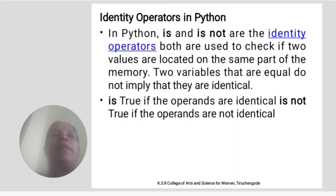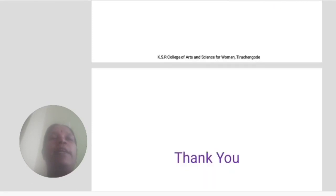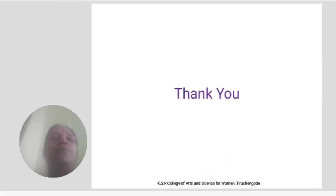Identity operators in Python. In Python, is and is not are the identity operators. Both are used to check if two values are located in the same part of memory. Two variables that are equal do not imply that they are identical. Is returns true if the operands are identical; is not returns true if the operands are not identical.